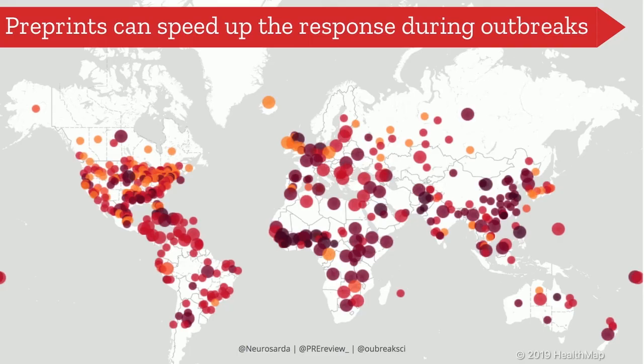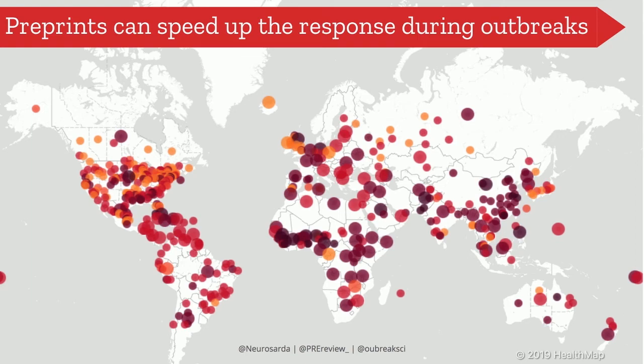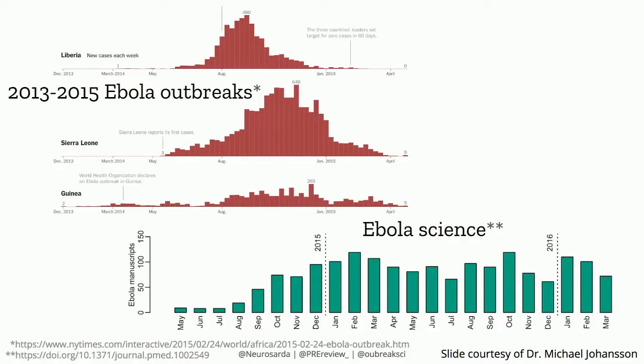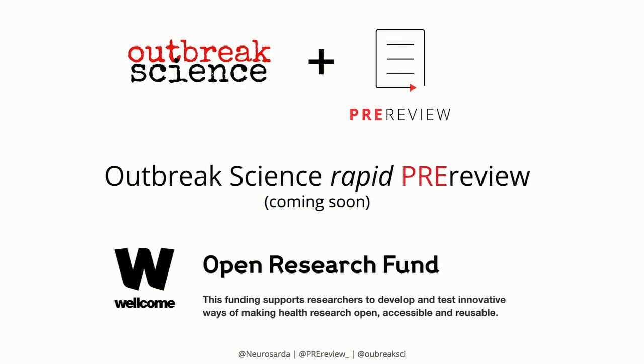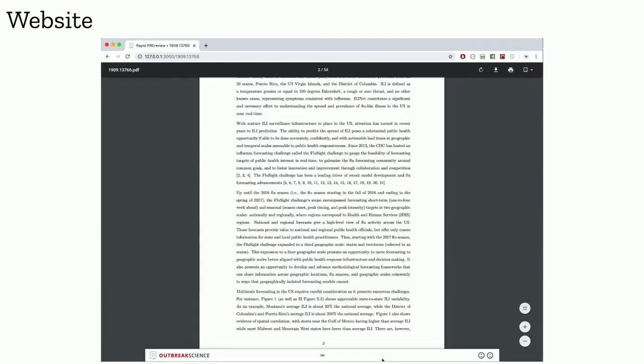The last thing I want to talk about is that we're also working with the outbreak science community. There are a lot of reasons why preprints are actually great for outbreak science — when you have an outbreak going on, the peer-reviewed literature comes out with a delay, and you wish that didn't happen. So we paired up with Outbreak Science, a nonprofit organization promoting preprints in that space, and we're developing a new platform to rapidly review preprints — it has an incredible UI and I'm going to demo this this afternoon.